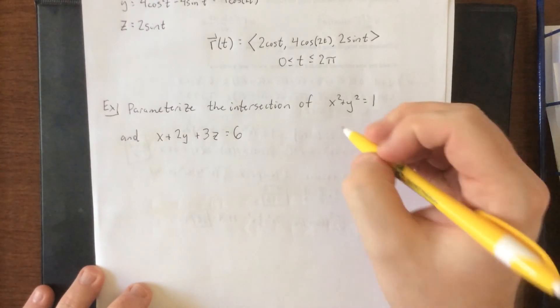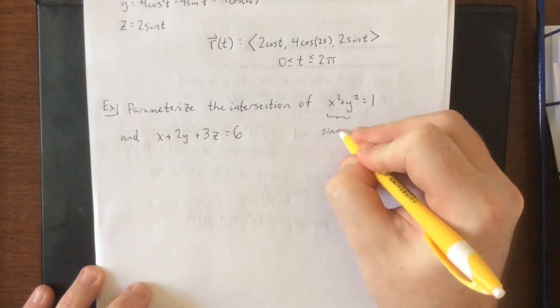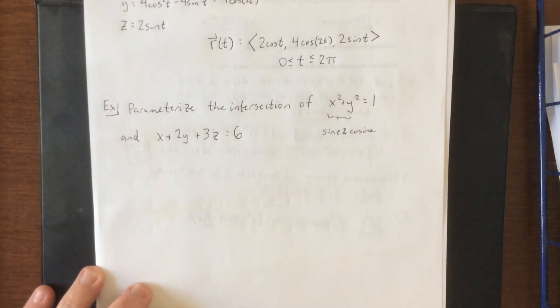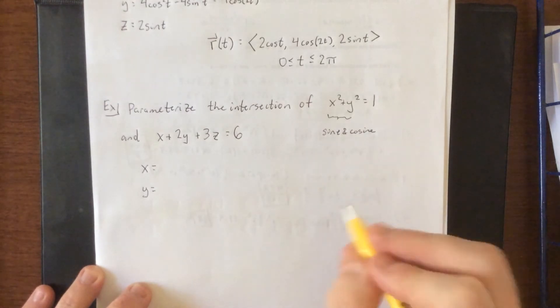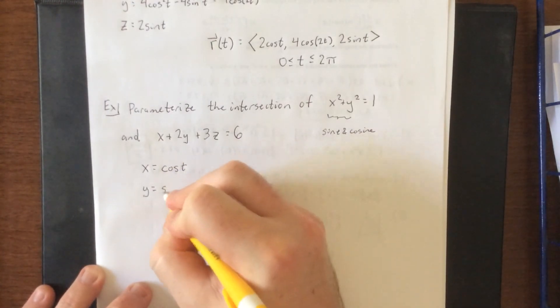Now, I'm going to do the same thing as what I did for the last one and start right here, and say that I'm going to express x and y in terms of the sine and the cosine. Once again, it's kind of arbitrary which one is which, but since we're used to seeing it this way, we'll let x be the cosine of t, we'll let y be the sine of t.